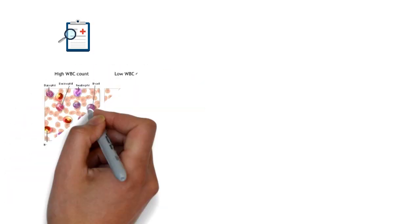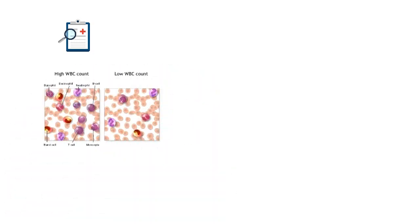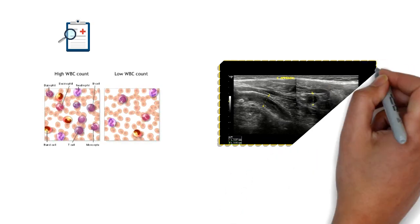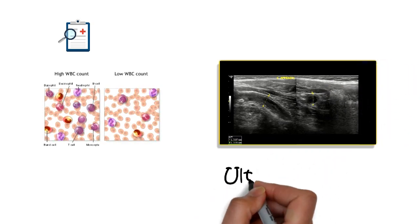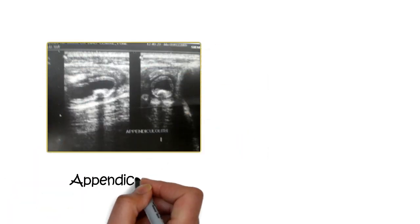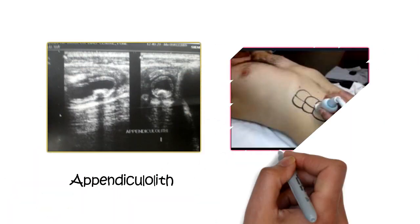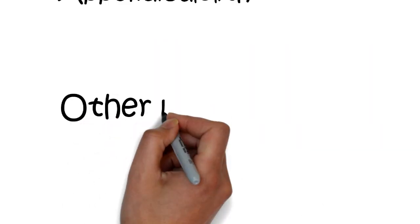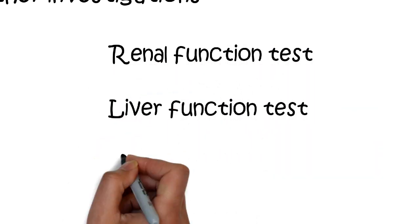Diagnosis depends on clinical presentation and blood investigations, in which the white blood cell count is raised — known as leukocytosis. Ultrasonography of the abdomen and pelvis may reveal a tubular, non-peristaltic, non-compressible structure measuring more than 6 mm in diameter with wall thickness greater than 2 mm, arising from the cecum, with thickened mesentery, free fluid in the right lower abdomen, and possibly an appendicolith. Probe tenderness may also be present. Renal function tests and liver function tests are also important for diagnosis and management.